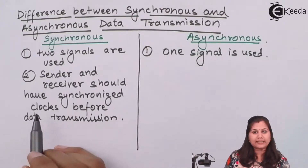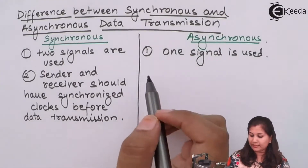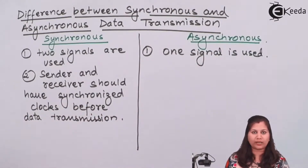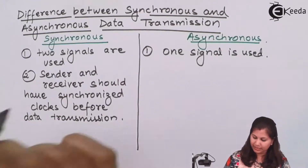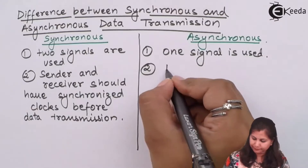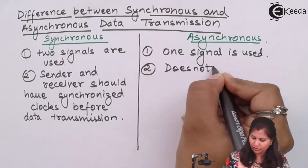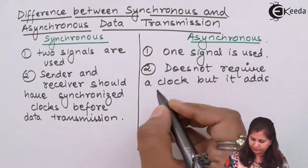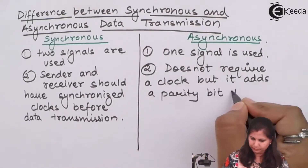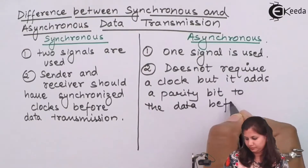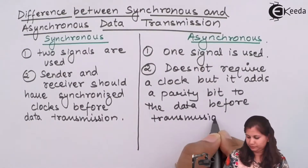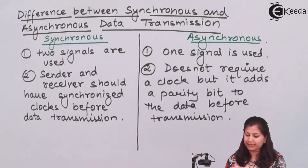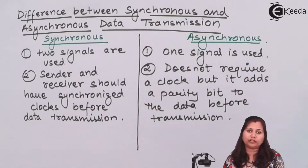An external clock is required in synchronous transmission. In the case of asynchronous, the sender and receiver do not require any external clock — no synchronization is required. In asynchronous, no clock is required, but a parity bit is added to the data before the transmission.